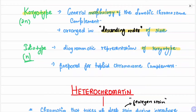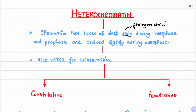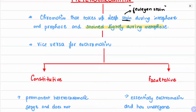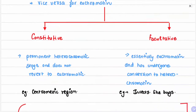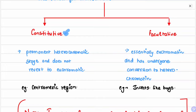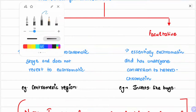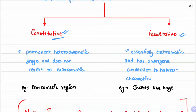Heterochromatin takes up a deep stain during interphase and prophase but stains lightly during metaphase. The vice versa is true for euchromatin: euchromatin takes a lighter stain during interphase and prophase but stains deeply during metaphase.